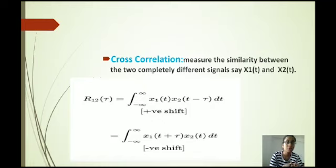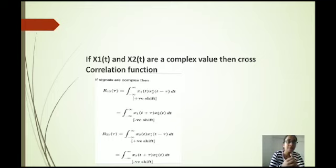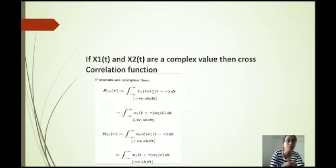If x1(t) and x2(t) are complex-valued, then the cross correlation function R12 equals the integral from minus infinity to infinity of x1(t) · x2*(t minus tau) dt, and for negative shift it is the integral of x1(t plus tau) · x2*(t) dt. Similarly, R21 equals the integral of x2(t) · x1*(t minus tau) dt, and for negative shift the integral of x2(t plus tau) · x1*(t) dt.